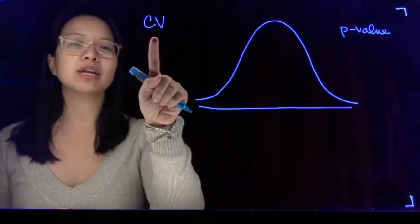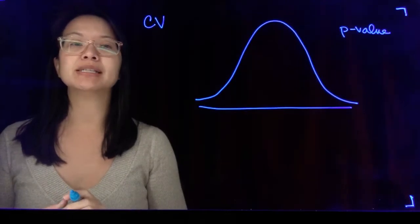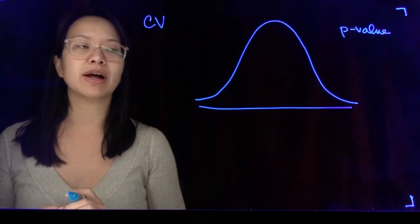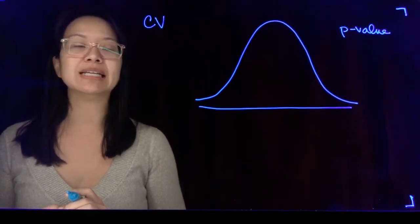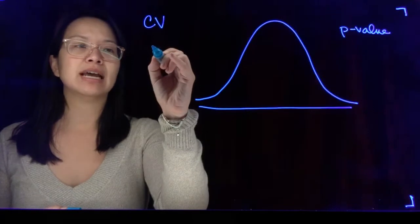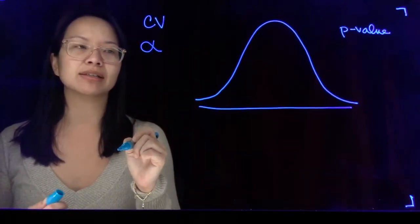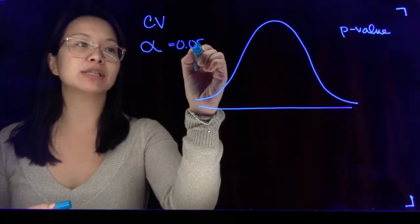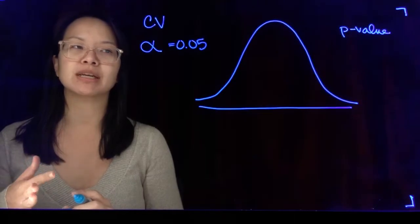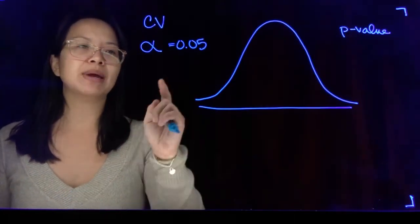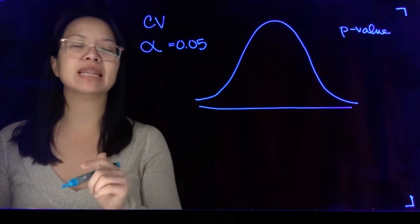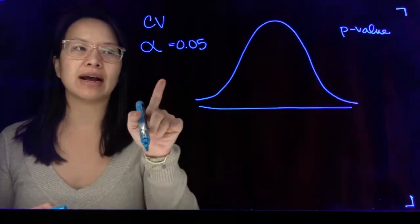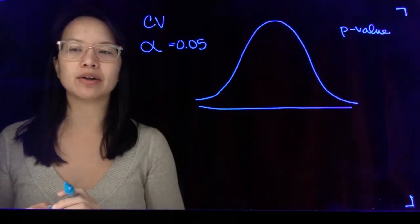When we're working with the critical value approach we're going to make decisions based on a decision rule. In order to figure out what our critical value or decision rule is, we need to identify the alpha — the level of significance. For example, you'll often see five percent, but it can also be one percent, ten percent, two percent. Based on that alpha we can find a critical value, and we learned in Excel how to plug in our alpha to find it depending on the situation.